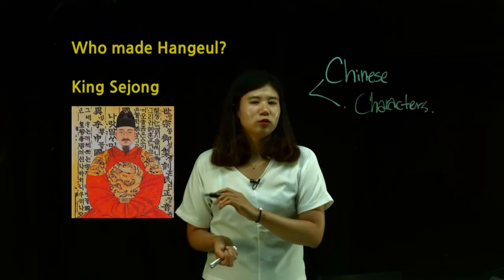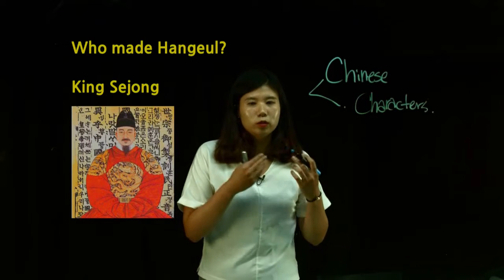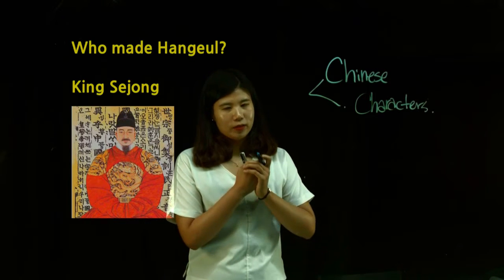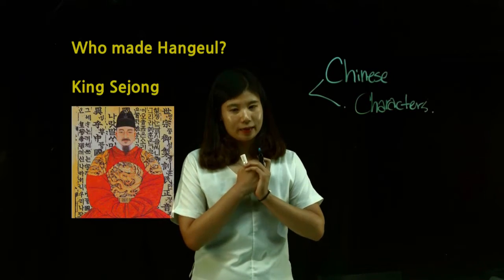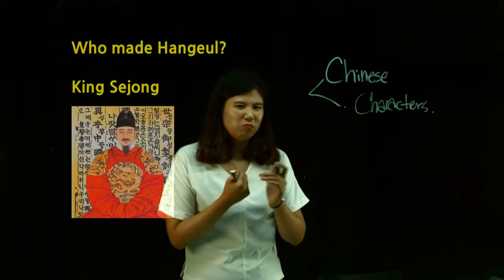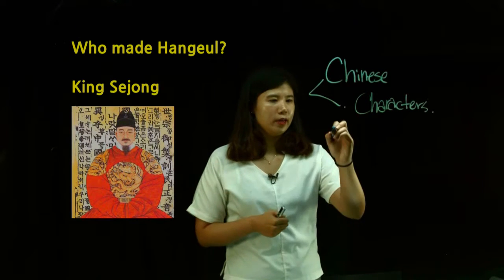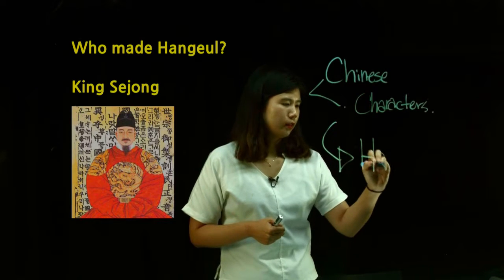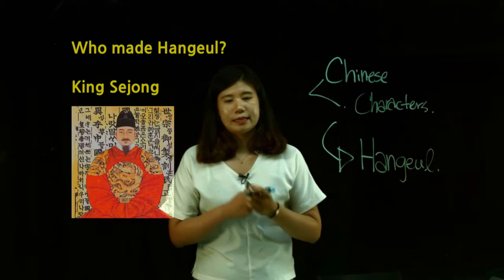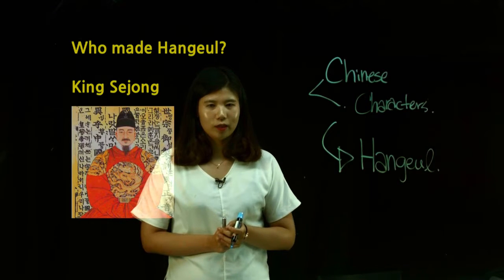King Sejong actually loved his people and he wanted to give them a lot. But in order to give them what they need, he needed to hear their voice — to listen to what they need and want. But they couldn't write and they couldn't read, so he had trouble doing so. And that's why he invented 한글 — just because he loved his people and he wanted to give them education. Some king, huh?